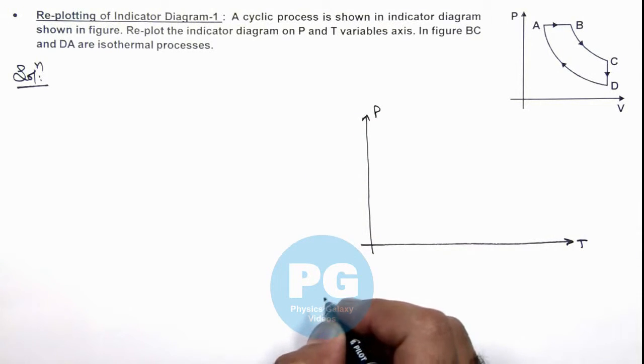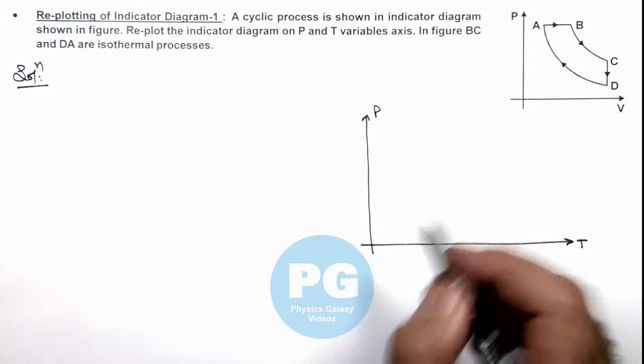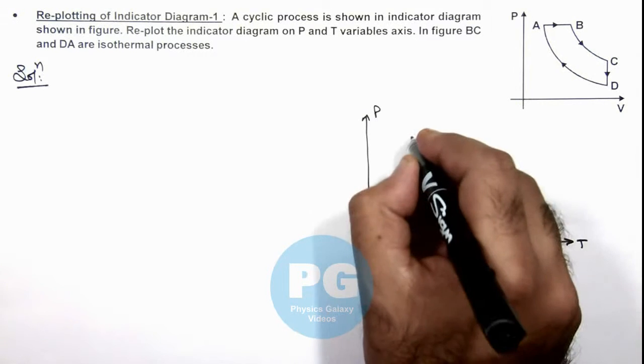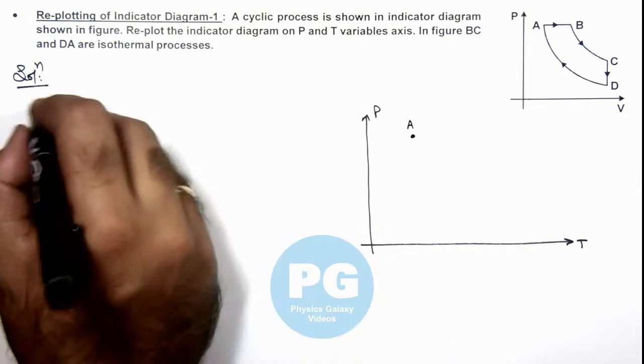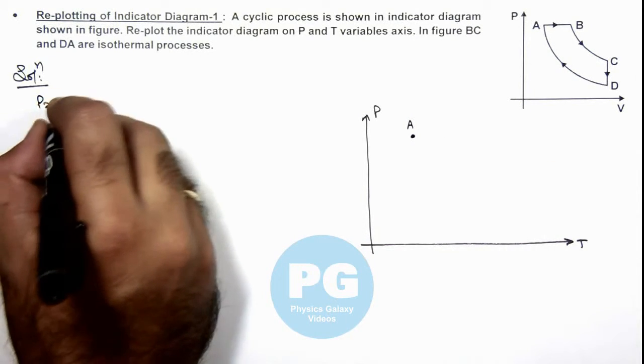Here we can start with state A, where pressure is P and temperature is T. So if we consider this is state A of the gas, then we can start with process AB.